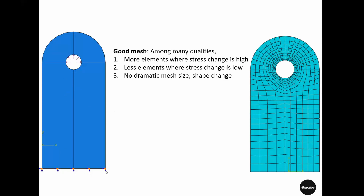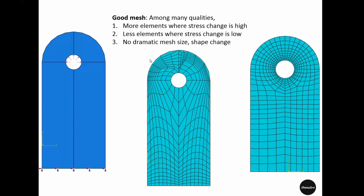This is an example of a good mesh for this part with the given boundary condition and loads. First condition — more elements where stress change is high — is ticked. Second condition — fewer elements where stress change is low — is also ticked. Finally, no dramatic change in the shape or size: the mesh changes smoothly in size and also in shape from one side to another, so that is also ticked.